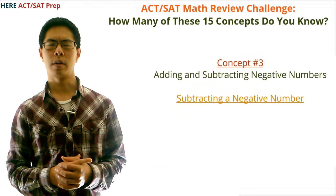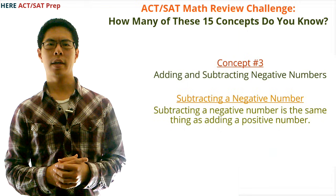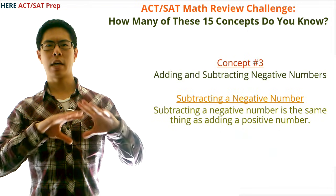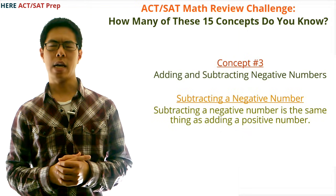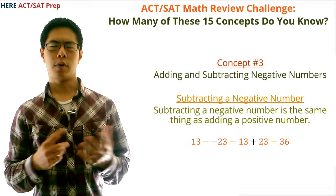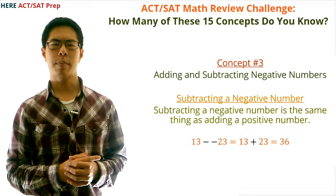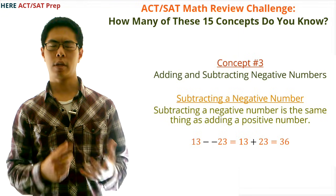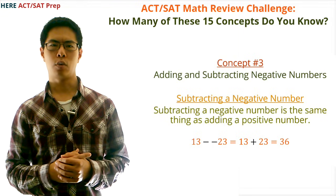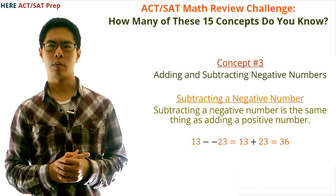To subtract negative numbers, simply recognize that subtracting a negative number is the same as adding a positive number. For example, 13 − (−23) = 13 + 23 = 36.